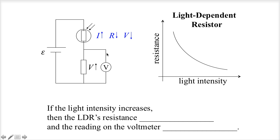Let's transfer that into the answer. The LDR's resistance went down, opposite of the light intensity's increase, and the reading on the voltmeter increased.